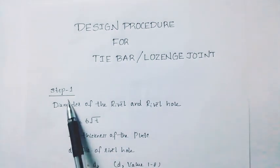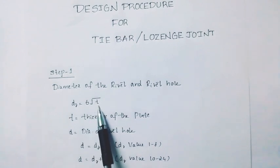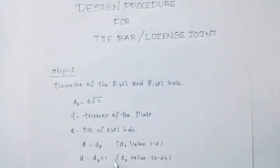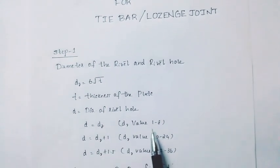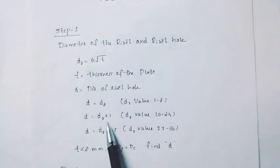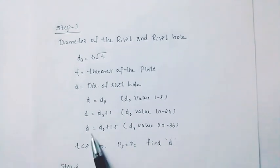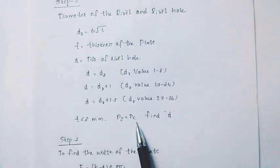Tie Bar or Lap Joint. Step 1: Diameter of the Rivet and Rivet Hole. Dr is equal to 6 into root T, where T is the thickness of the plate. Small d is the diameter of the rivet hole. Dr is equal to 1.2d. For diameters 10 to 24, d equals Dr. For 27 to 36, d equals Dr plus 1.5. This applies when T is less than 8.